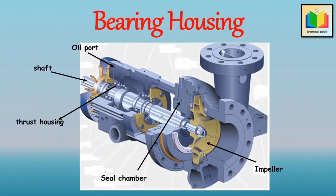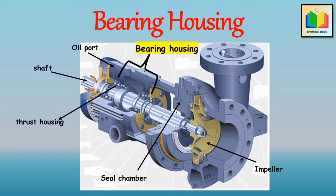The next component is the bearing housing. The bearing housing encloses the bearings mounted on the shaft. The bearings keep the shaft or rotor in correct alignment with the stationary parts under radial and transverse loads. The bearing housing also includes an oil reservoir for lubrication, a constant-level oiler, and a jacket for cooling by circulating cooling water.